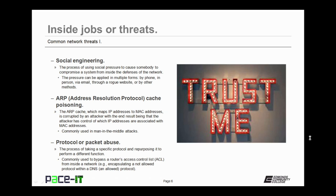Then there are protocol or packet abuse threats. This is the process of taking a specific protocol and repurposing it to perform a different function. Protocol abuse is commonly used to bypass a router's access control list from inside of a network. An example of this is encapsulating a not-allowed protocol within a DNS packet — which is almost always an allowed protocol — in order to get that unallowed protocol out of the network.